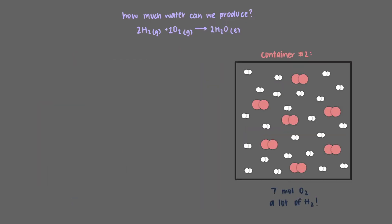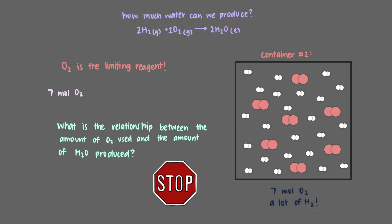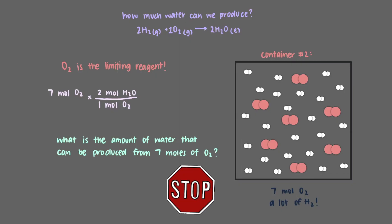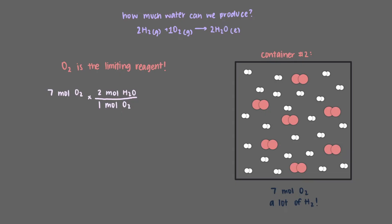Now let's focus on the other container. How much water can we make if all of the oxygen were consumed? Since we have an infinite amount of hydrogen in this container, oxygen is the limiting reagent. We have 7 moles of oxygen. Looking at the balanced equation, 1 mole of oxygen is needed to produce 2 moles of water. Multiplying 7 moles of oxygen by this ratio, the maximum amount of water that can form is 14 moles.